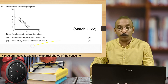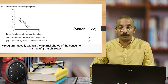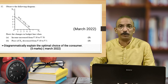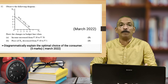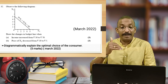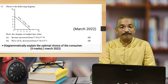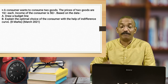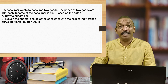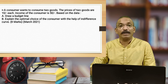The third topic is consumers — consumer's optimum choice. Here is an example question worth 22 marks: diagrammatically explain the optimal choice of the consumer. The optimum choice is the right choice, combining the budget line with the indifference curve. A consumer wants to consume two goods — draw a budget line and explain the optimal choice of the consumer with the help of the indifference curve.